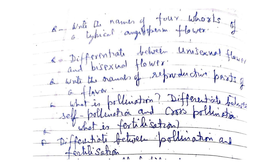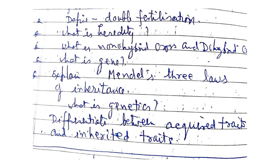What is fertilization? Differentiate between pollination and fertilization. Define double fertilization. What is heredity? What is monohybrid cross? What is dihybrid cross? Explain Mendel's three laws of inheritance. What is genetics? Differentiate between acquired traits and inherited traits.